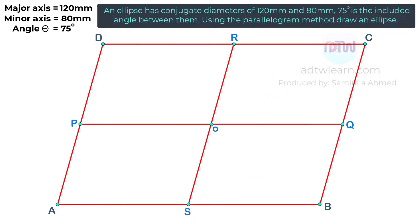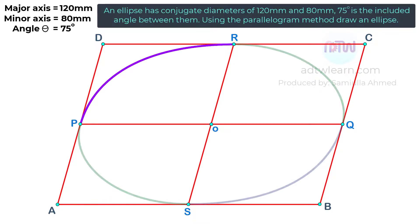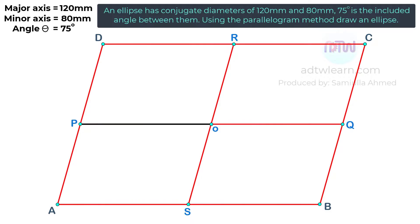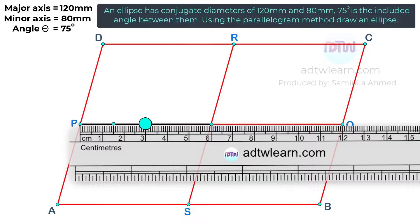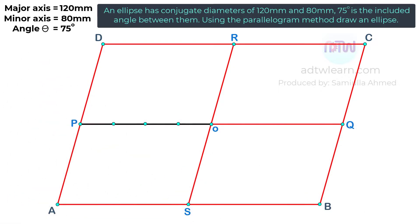In each of these parts of a parallelogram, one-fourth of an ellipse will come. To get this one-fourth of an ellipse, we have to divide this line into some equal divisions. The number of divisions can be anything; we just have to remember that each division should be equal in length. Since we know the length of this line is 60 millimeters, each point will be 15 millimeters or 1.5 centimeters away. Using a ruler, mark points at 1.5 centimeters and name these points as 1, 2, and 3.